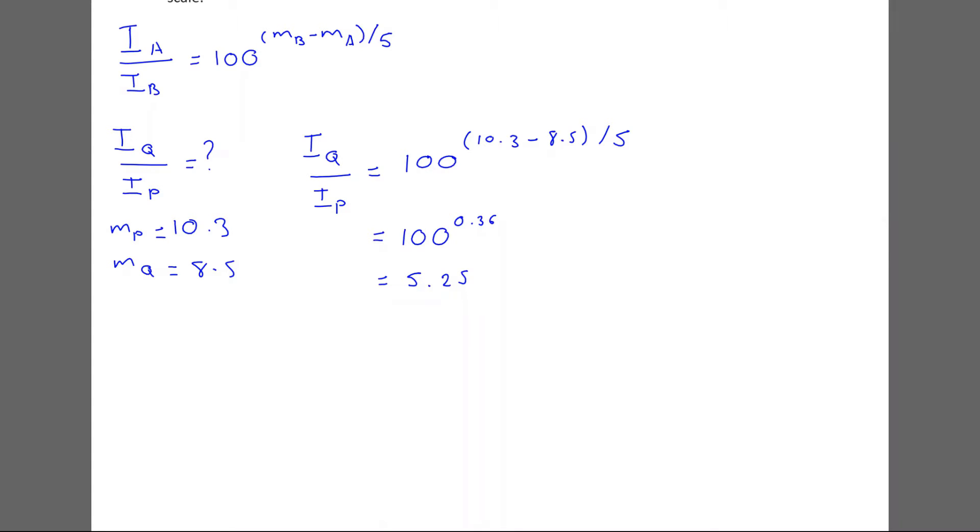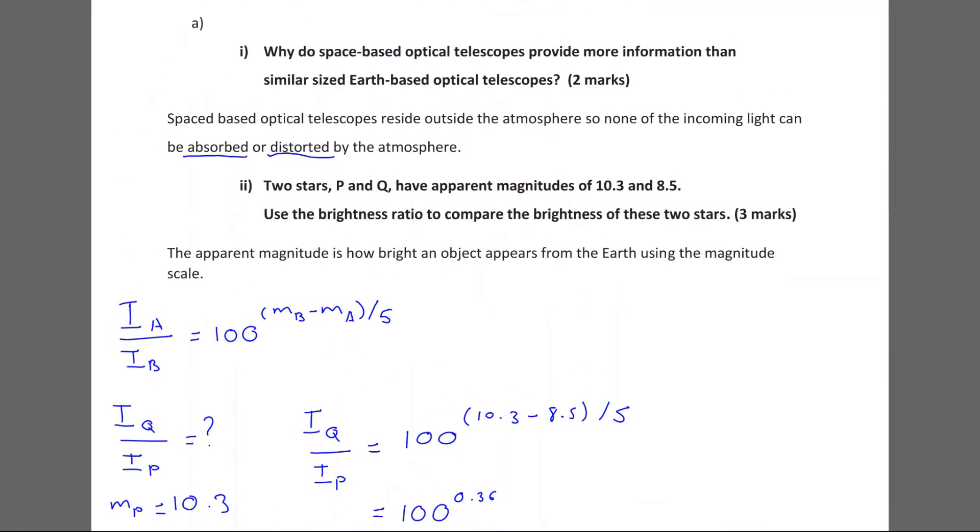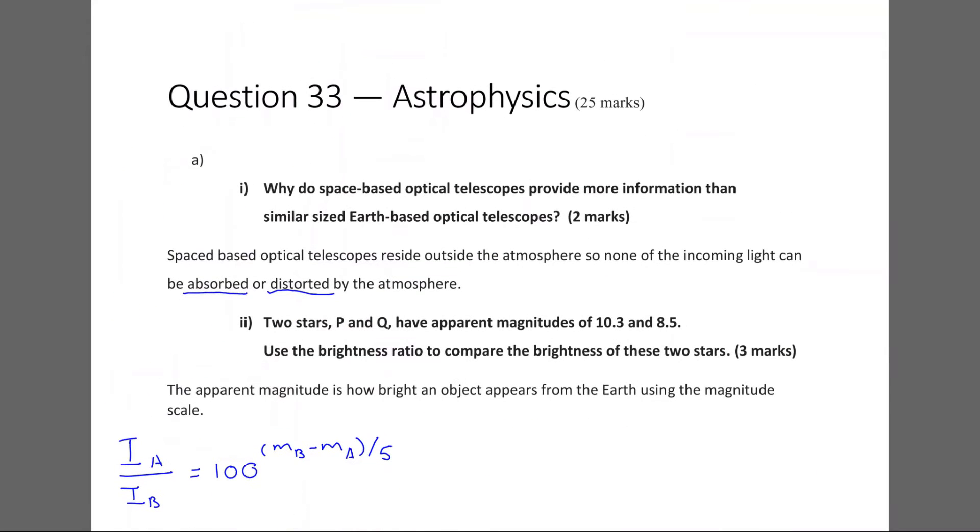So I do that, and I see that IQ over IP equals 5.25. And now if I multiply both sides by IP, I get IQ equals 5.25 IP. So IQ, we can say, is 5.25 times greater than IP, or 5.25 times as bright as IP. That's what we can say. Cool. So we figured out how bright IQ is compared to IP. And that's how you answer part two.